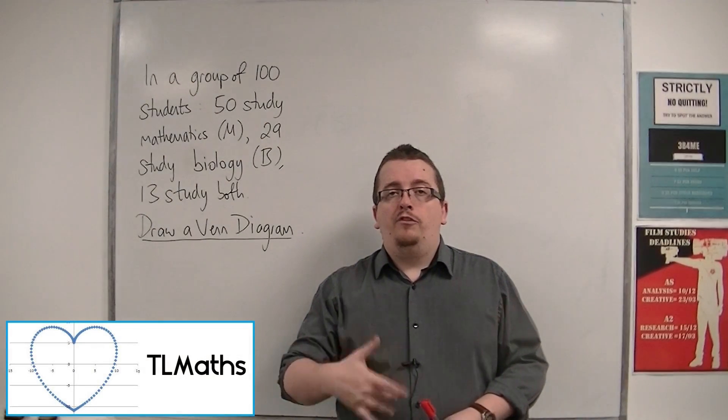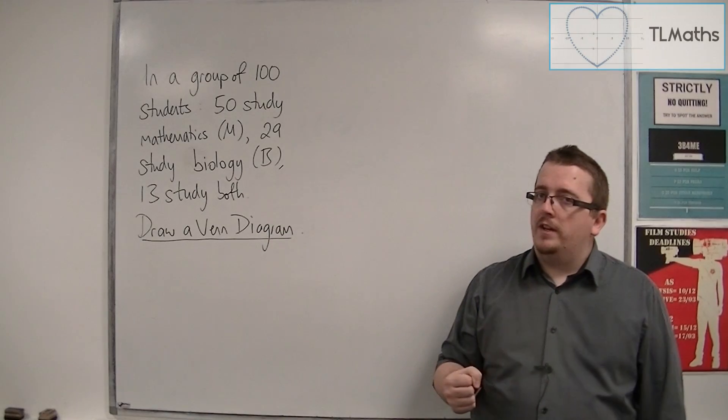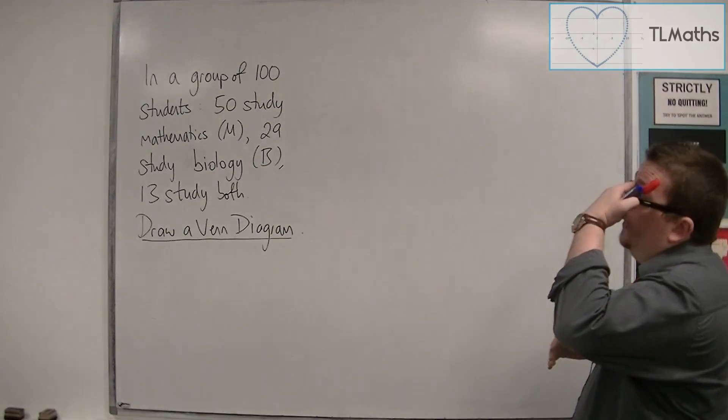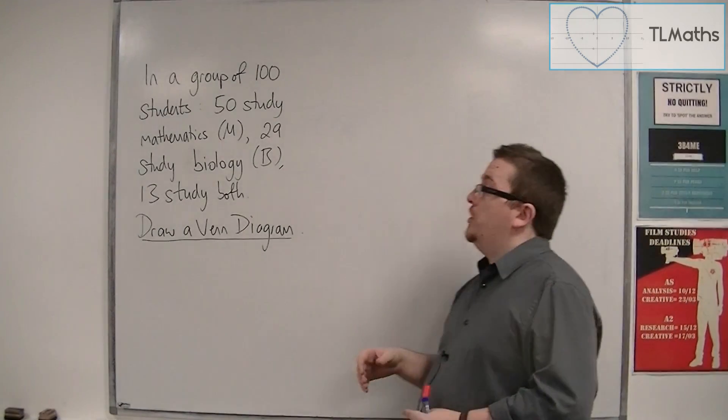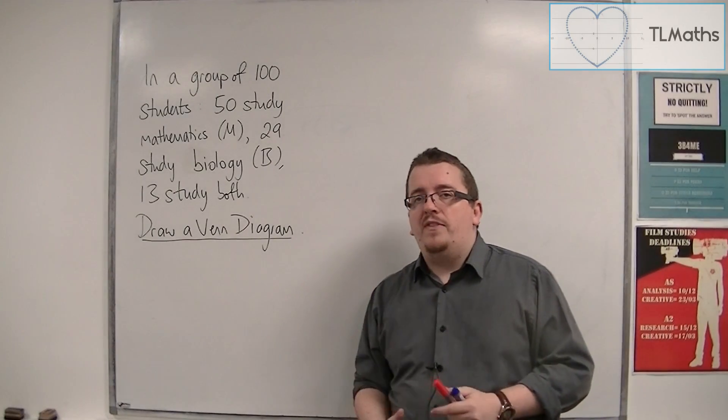Sometimes you will be given information and then you need to convert it and write it into a Venn diagram. So for example, in a group of 100 students, 50 study mathematics, 29 study biology, and 13 study both. And we want to draw a Venn diagram to represent this information.